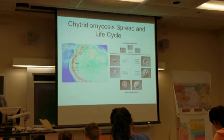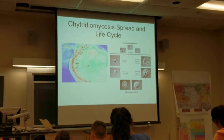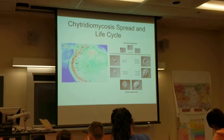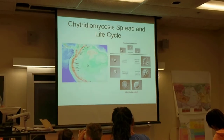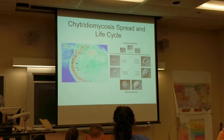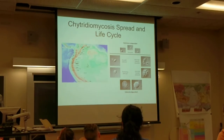Whether one hypothesis, the other, or both are playing a role hasn't been fully resolved, but it's a starting point to figure out why there is such a rapid decline in amphibians that could cause major extinctions. Some species have already gone extinct, and other species could face even worse outcomes.